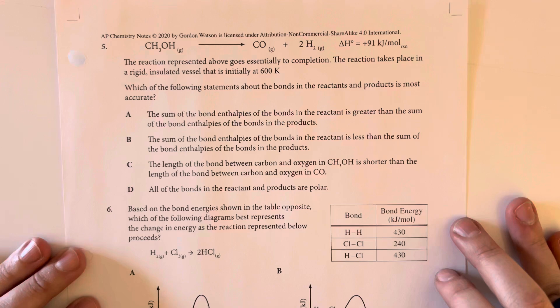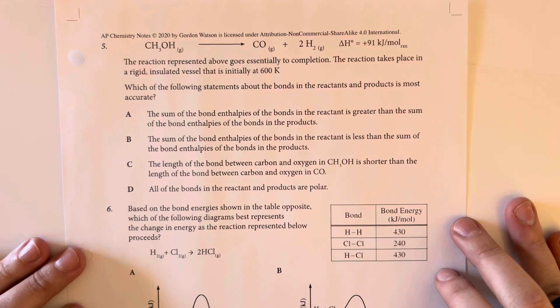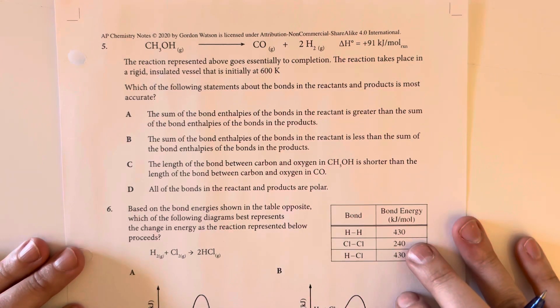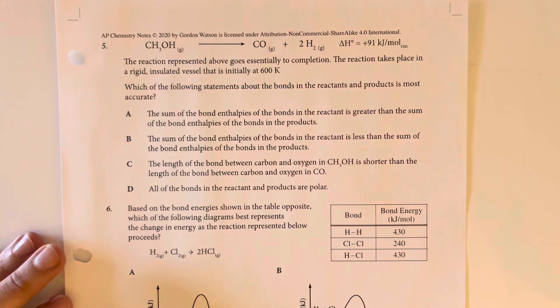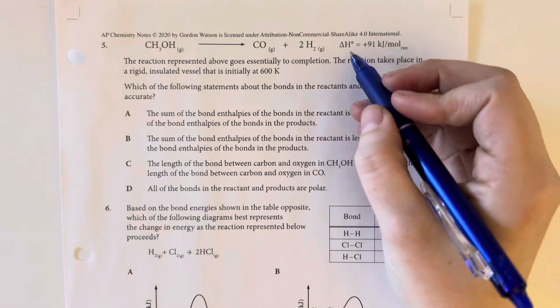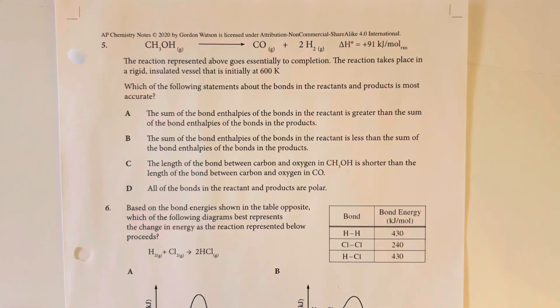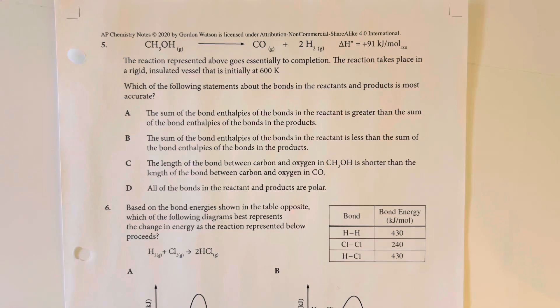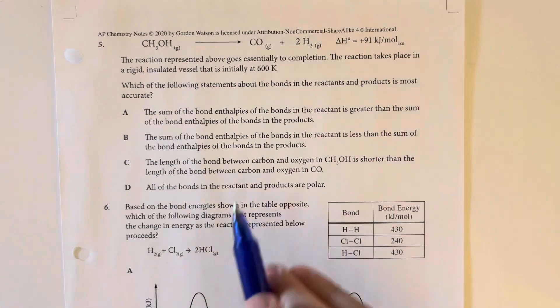The reaction represented above goes essentially to completion. The reaction takes place in a rigid insulated vessel that is initially at 600 Kelvin. Which of the following statements about the bonds in the reactants and products is most accurate? We can see that our delta H is positive. That means that we have absorbed energy.